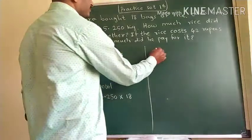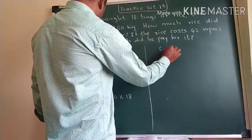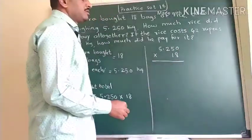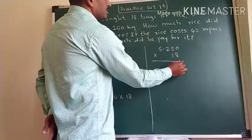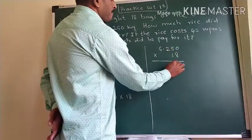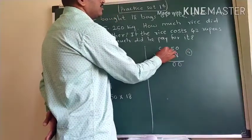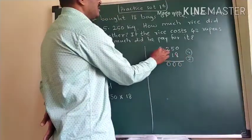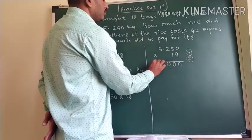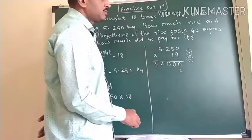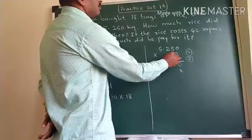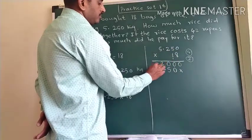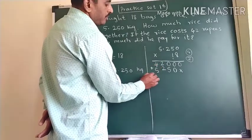Now we multiply 5.250 × 18. Multiplying by 8: 8 zeros are 0, 8 fives are 40 — 4 is the carry; 8 twos are 16, 16 plus 4 is 20 — 2 is the carry; 8 fives are 40, 40 plus 2 is 42. We put 1 cross and multiply by 1: 1 zero is 0, 1 five is 5, 1 two is 2, 1 five is 5. Now we add these two partial answers.